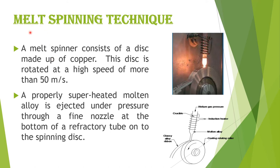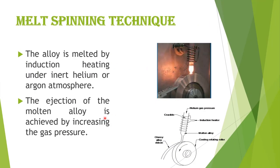In the melt spinning technique, a melt spinner consists of a copper disc rotated at a high speed of more than 50 meters per second. A properly superheated molten alloy is ejected under pressure through a fine nozzle at the bottom of a refractory tube onto the spinning disc. The alloy is melted by induction heating in an inert helium or argon atmosphere.